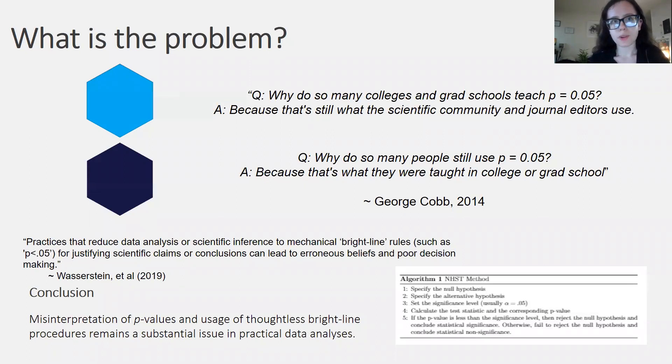I'm assuming that we're all familiar with the frequentist concept of null hypothesis significance testing and computing p-values. If you've ever taken a statistics class, this five-step algorithm here probably looks pretty familiar to you.